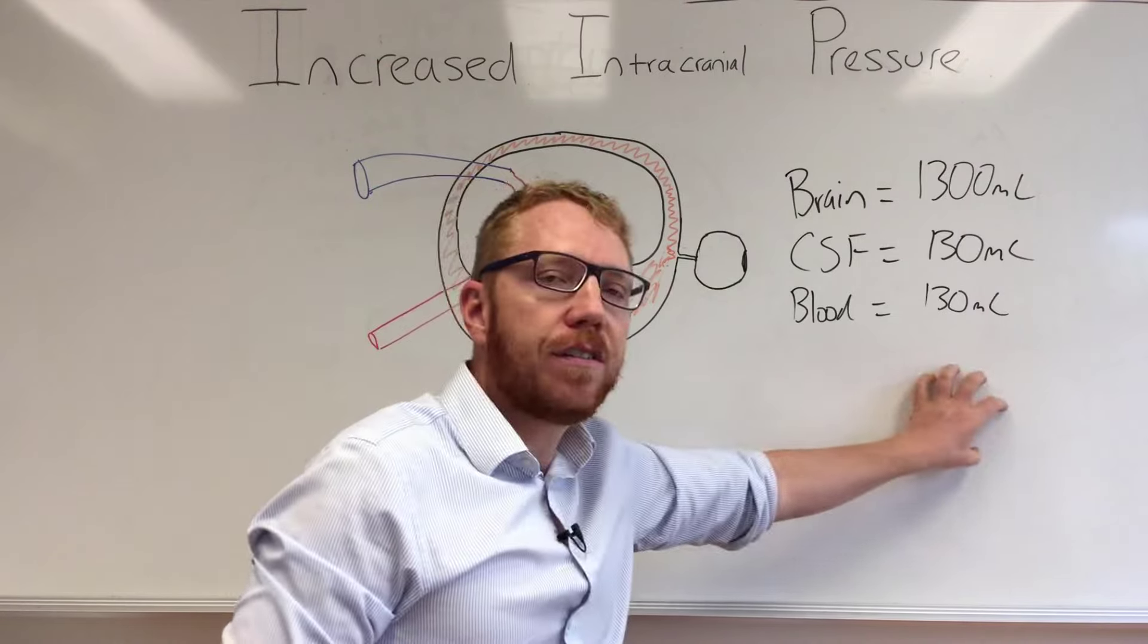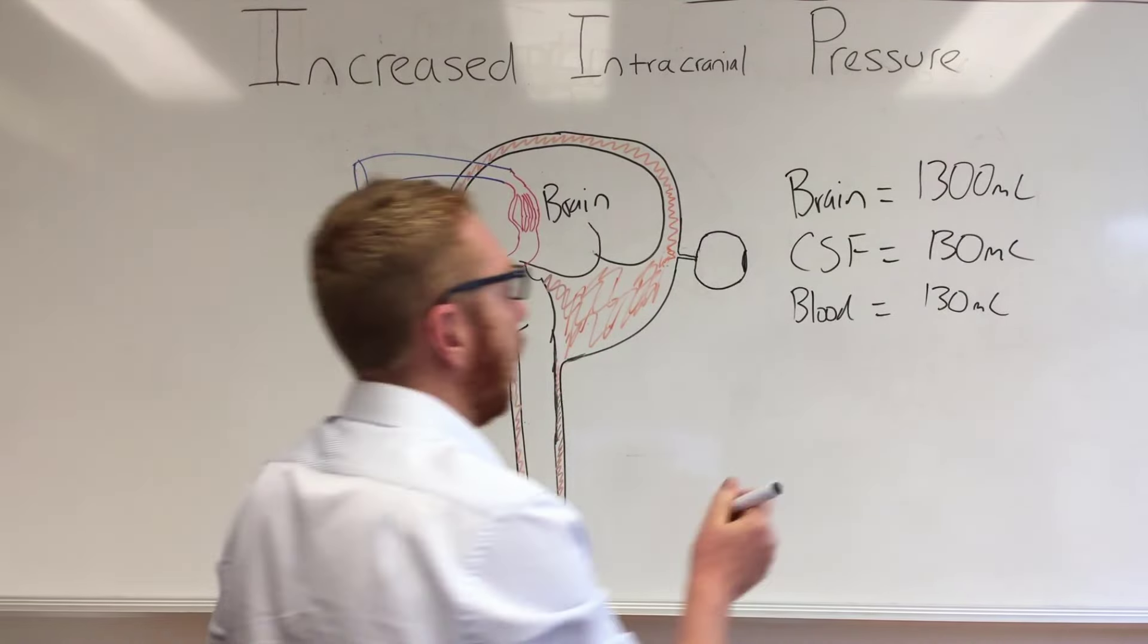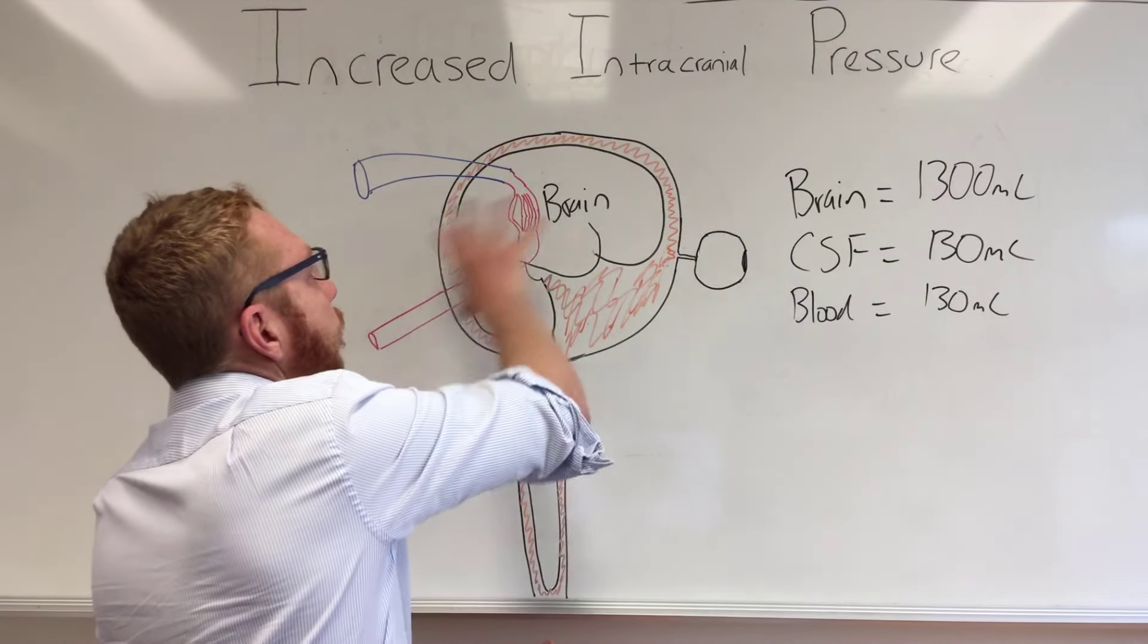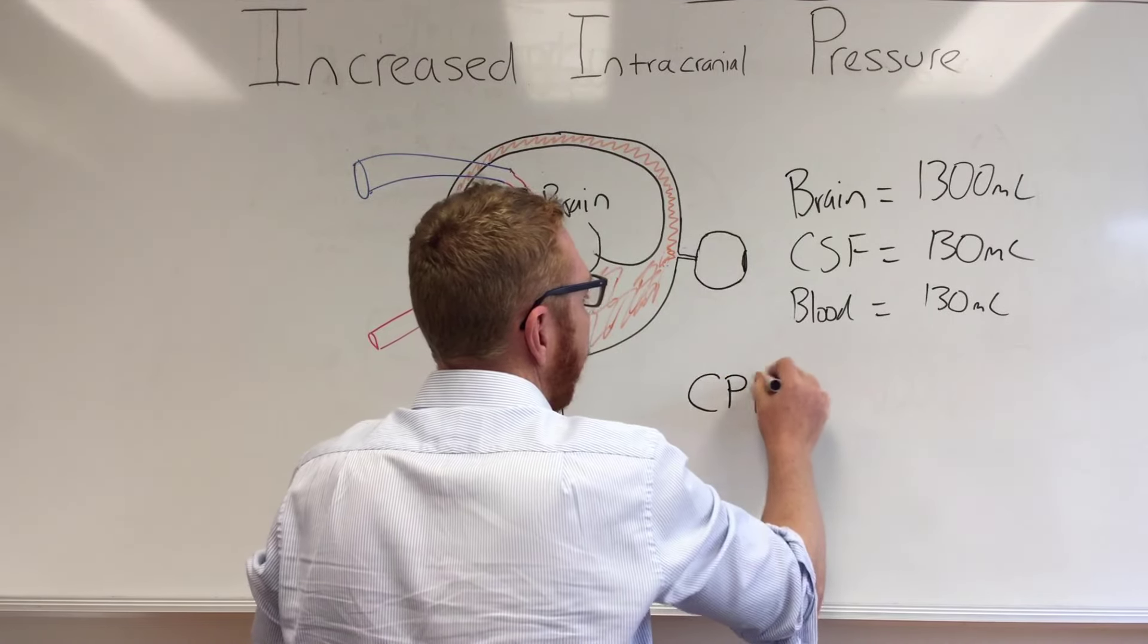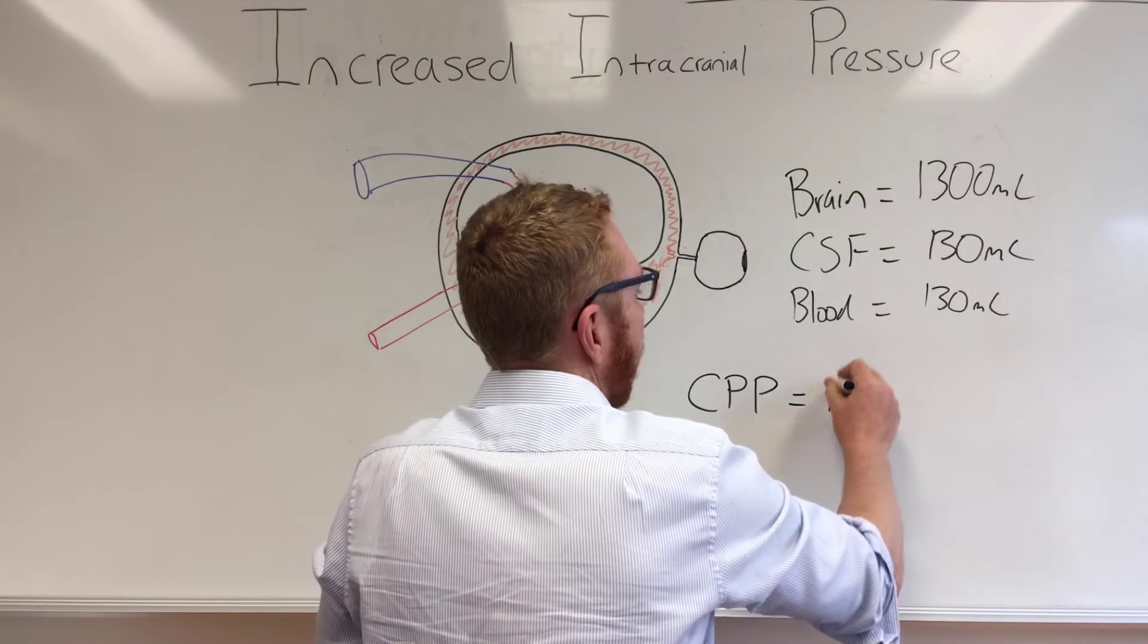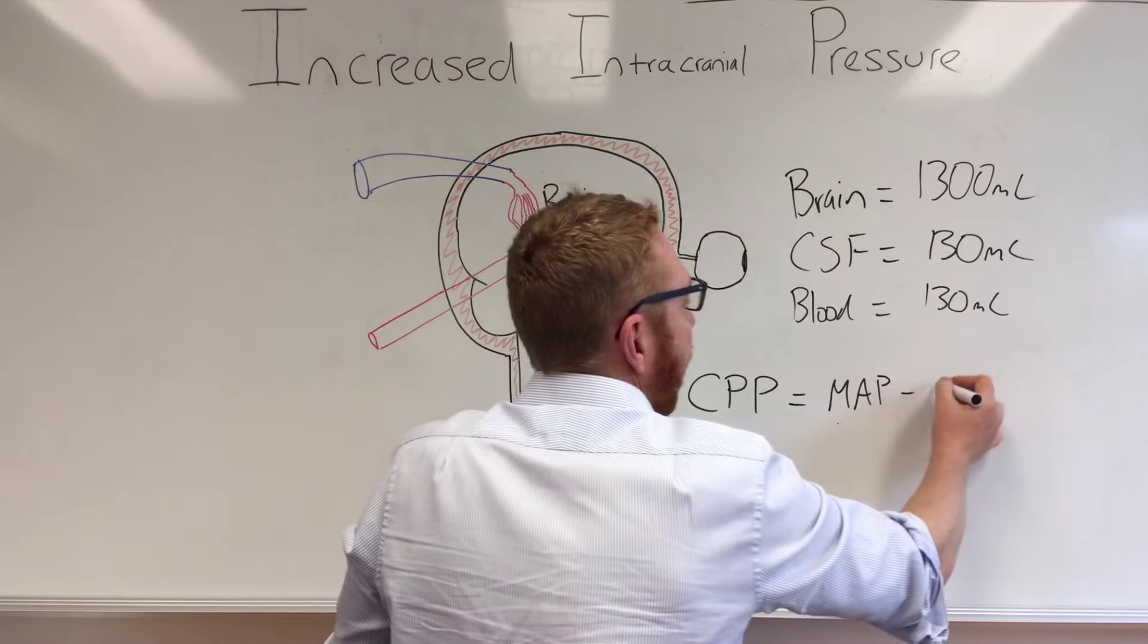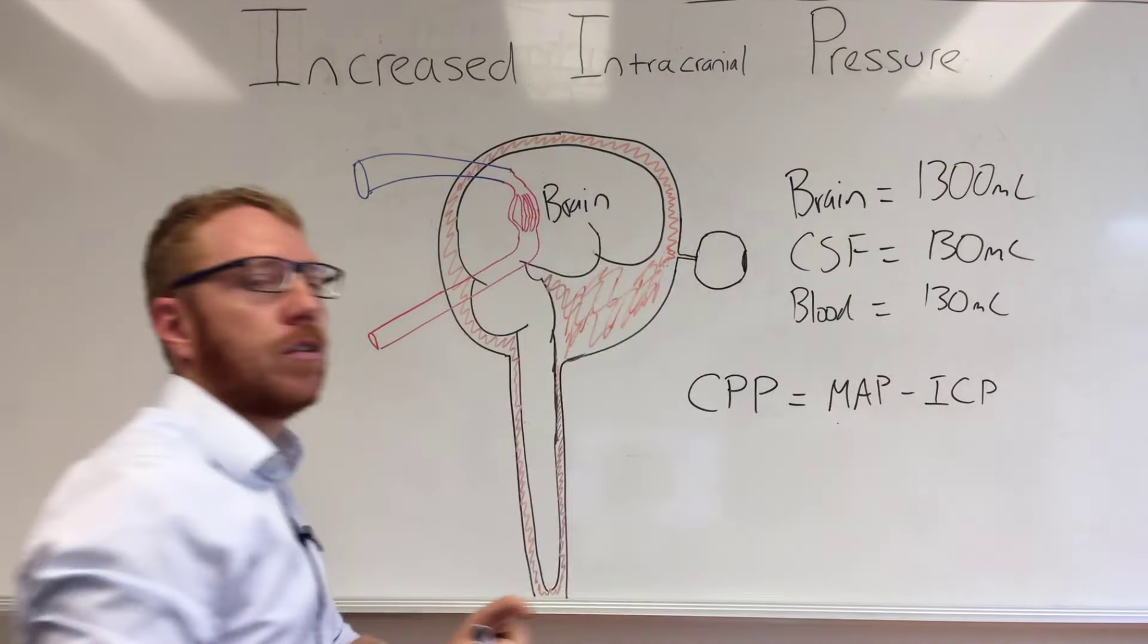Let's have a look at a formula that we work at to try and figure out the ICP. Firstly, we need to figure out what is the pressure required to perfuse the brain. This is cerebral perfusion pressure or CPP and this equals the MAP, the mean arterial pressure, minus the intracranial pressure. This is the one we're going to focus on mostly today.